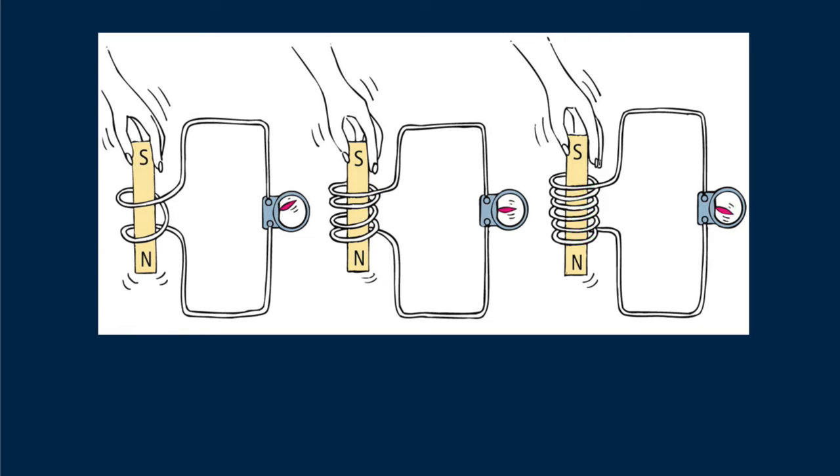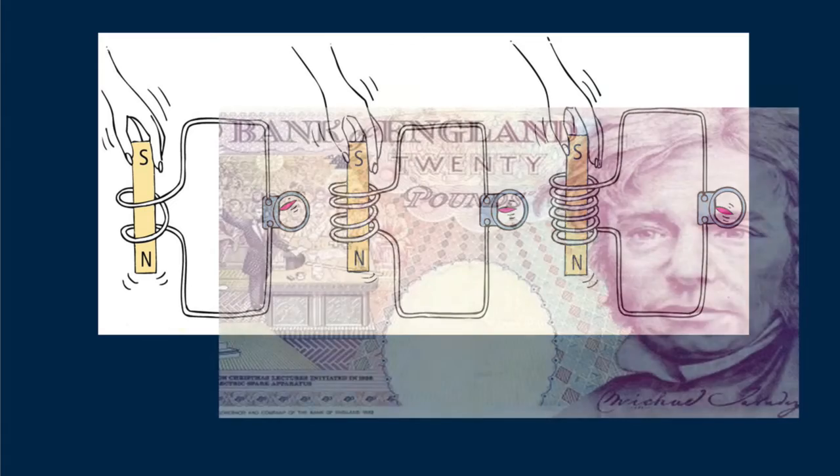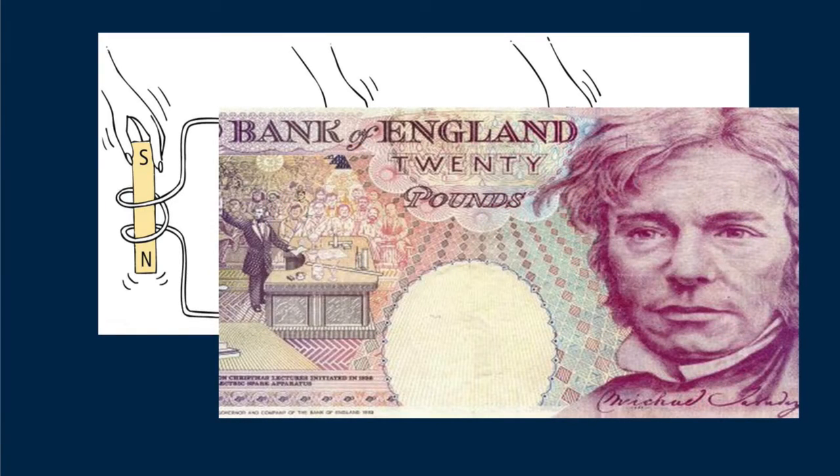When Faraday was asked by his queen of what importance was his electromagnetic induction, he replied that she would soon tax it. For Faraday was correct. It became the underbelly of the Industrial Revolution.